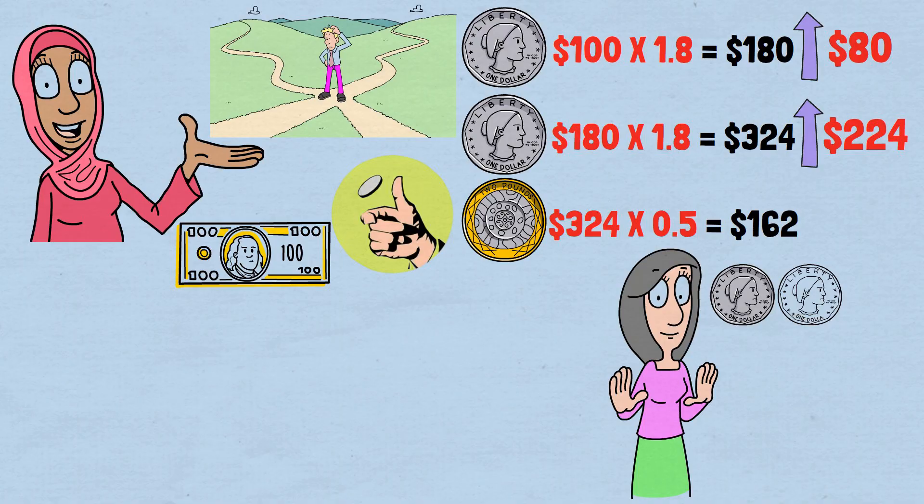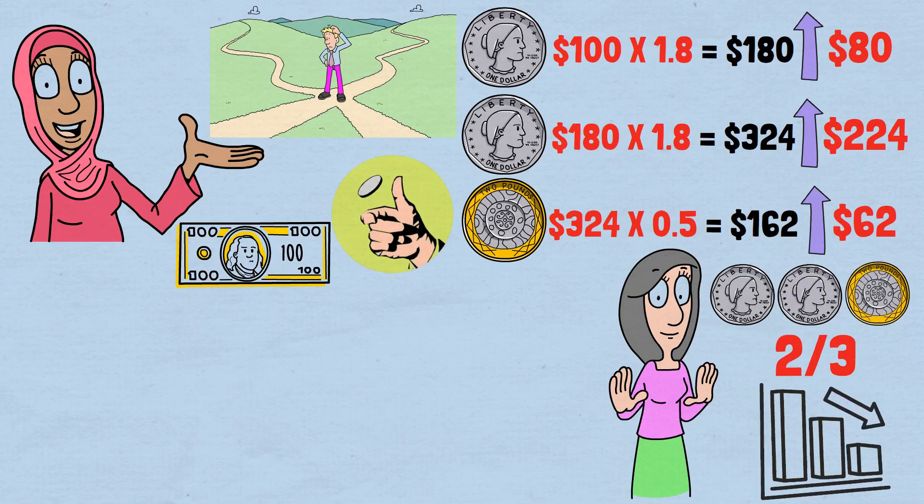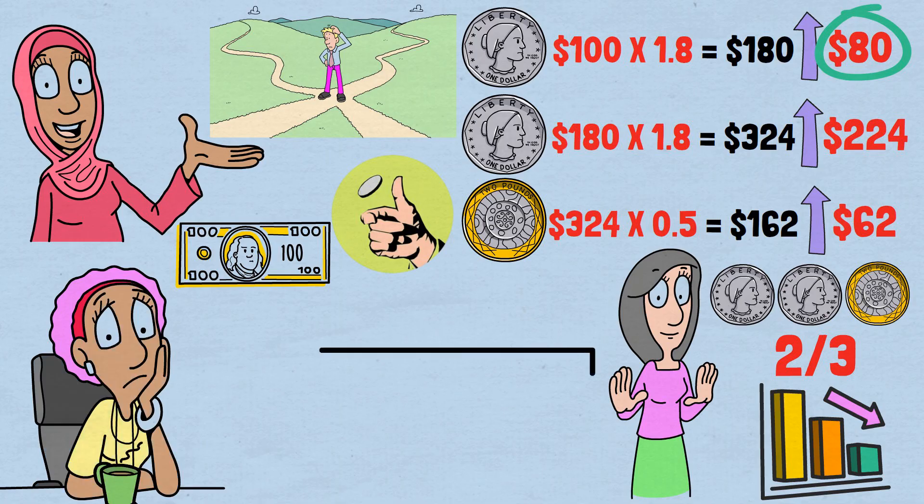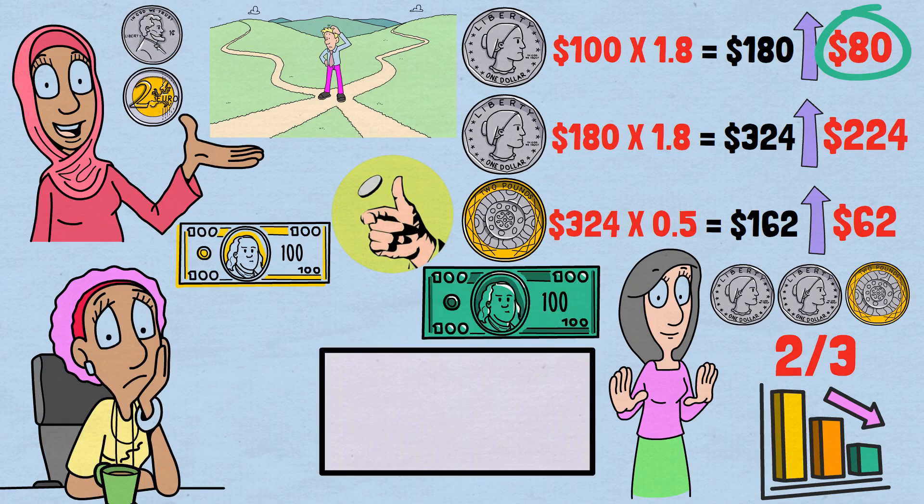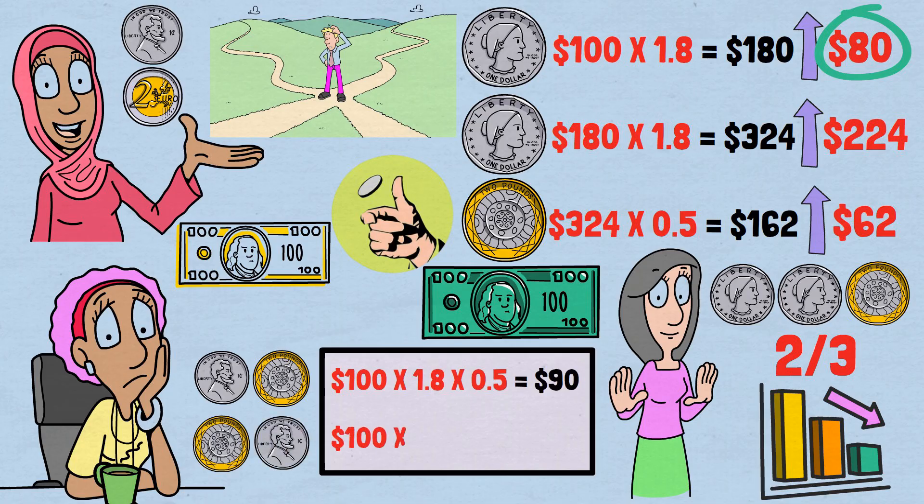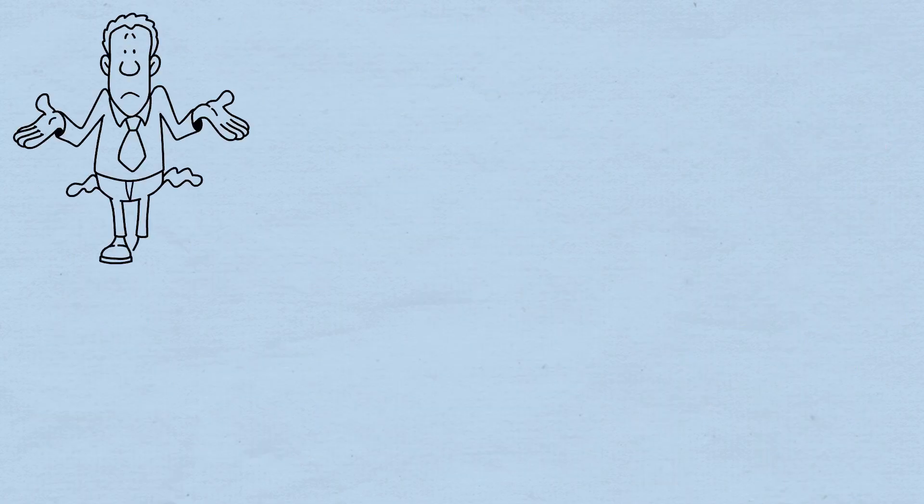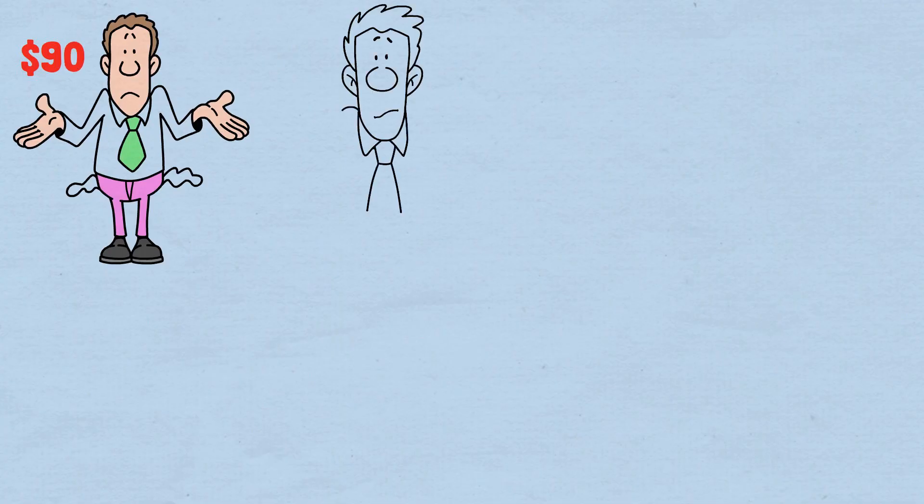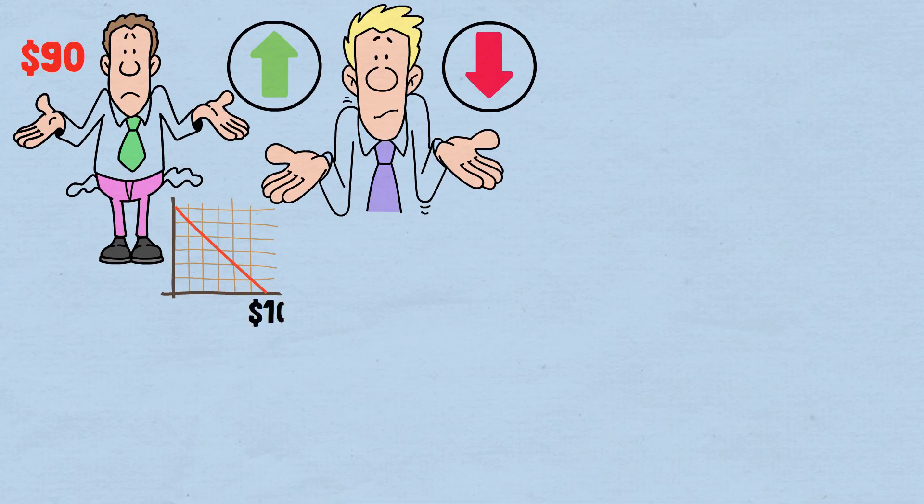Wait a minute. We flipped two heads and one tail, winning two out of three times. And we're only up $62. That's less than winning the first flip alone. Here's where the cruel mathematics becomes clear. Let's look at the simplest case. One heads, one tails. Starting with $100, heads first, then tails. $100 times 1.8 times 0.5 equals $90. Tails first, then heads. $100 times 0.5 times 1.8 equals $90. Either way, we end up with $90. We've broken even in terms of wins and losses, yet we've lost $10.